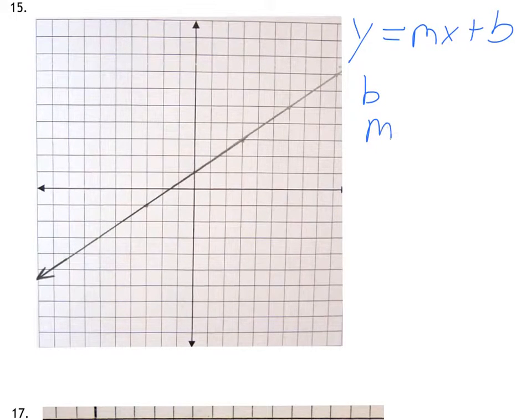Remember we said b is your initial value, it's your beginning. It's where it crosses the y-axis. It's your y-intercept. So where does this line cross the y-axis? Well I think we can see it crosses right here at this point and it looks like it's a positive 1. So b would be 1.